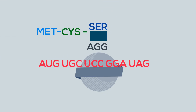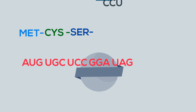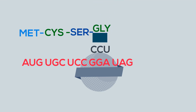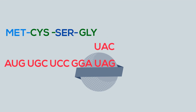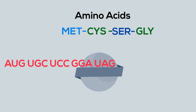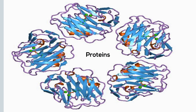The amino acids form a long chain held together by a peptide bond. After reaching the stop codon, the long chain of amino acids will twist and fold and create a protein.